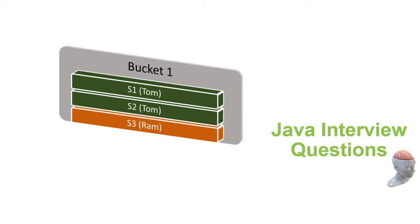The contract is straightforward. Contract number one: when two objects are equal, the hashCode must be equal — there is no way they cannot be equal. But vice versa — when two objects have the same hashCode, it is not necessary that those two objects need to be equal. That is not mandatory.